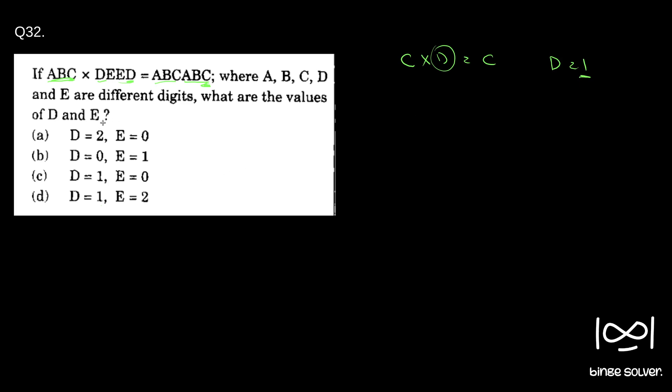So if d is 1, checking the options, a and b get eliminated, and the only options for e are 0 and 2. We'll check e = 0, that is the most likely case since the number is getting repeated.